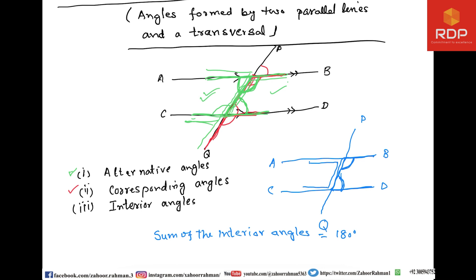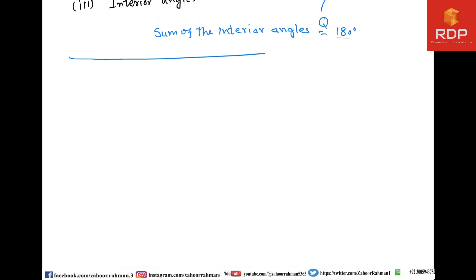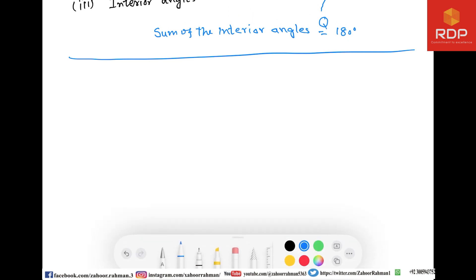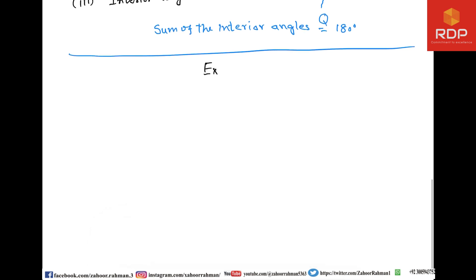These are the three concepts: alternate angles, corresponding angles, and interior angles. Now we come to exercise 10B, which is on page 250 of the book.